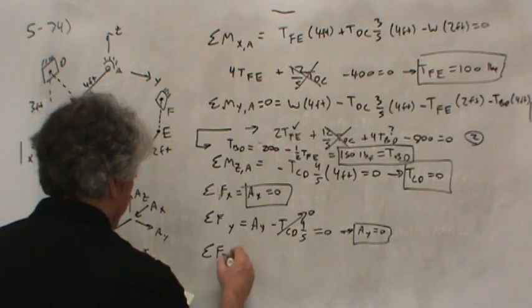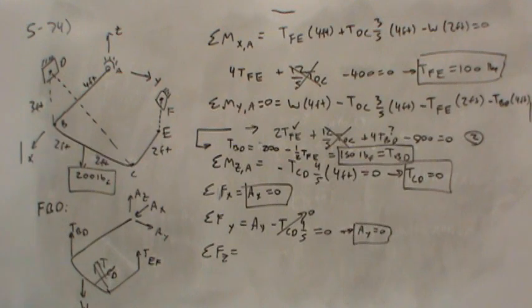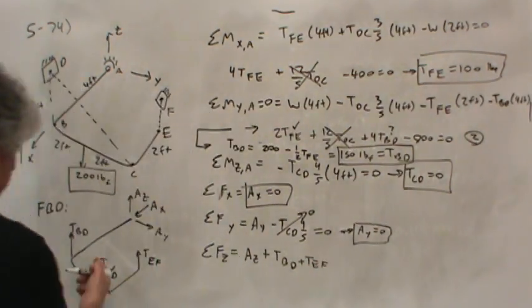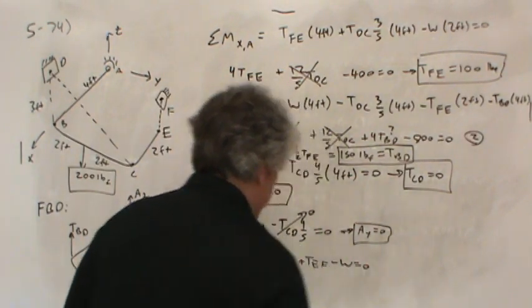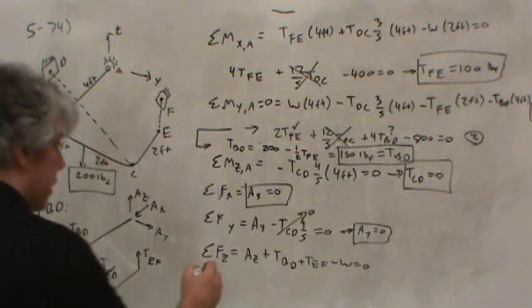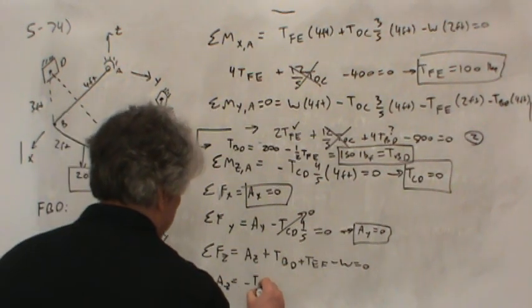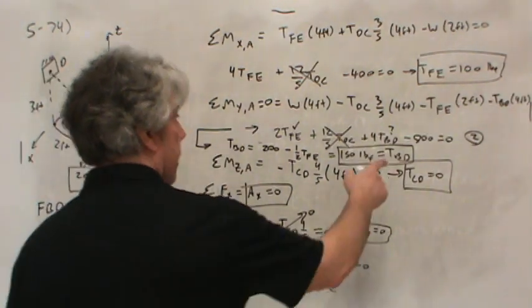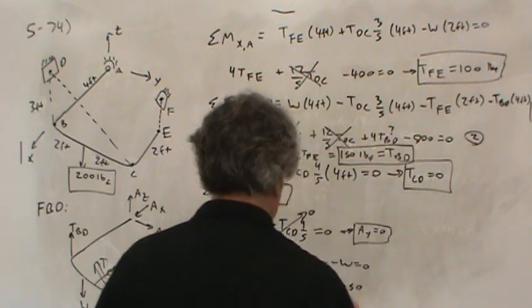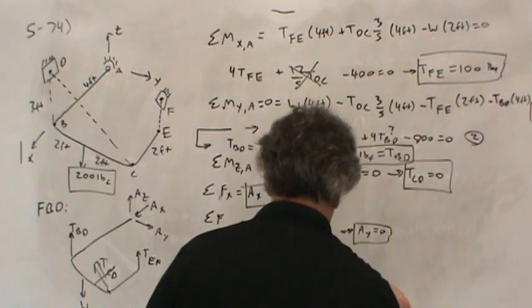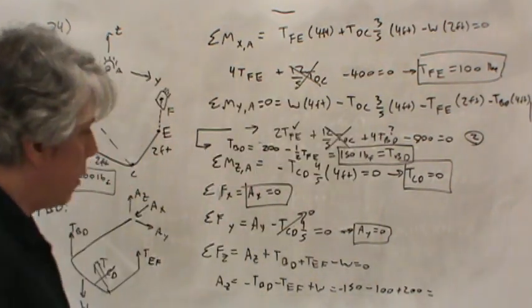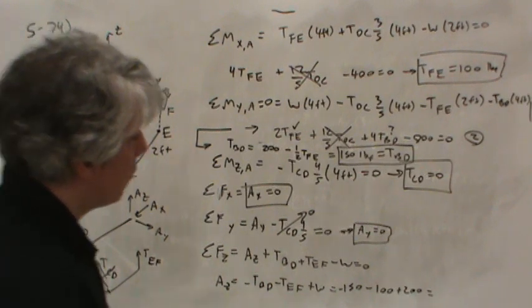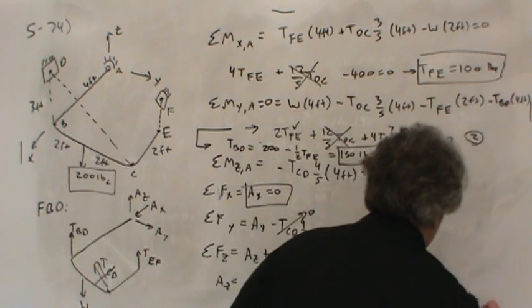Summing forces in the Z direction, what do we have? Well, let's see. We've got AZ plus TBD plus TEF. There is no TCD. Minus W equals zero. And so, AZ would have to be equal to TB, well, negative TBD minus TEF plus W. TBD, 150, that's a negative. Negative TEF minus 100. W plus 200, what do we get? 150 minus 150 is, I'm sorry, 150 minus 100 is negative 250. Plus 200 gives us negative 50 pounds.